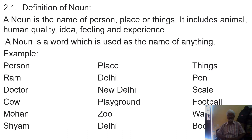A noun is a word used as the name of anything. We try to understand it through name — we ask: what is the name of the thing? For example, in person: Ram, doctor, cow, Mohan, Shyam. In places: Delhi, New Delhi, playground. And things: pen, scale, football, water, book, pencil, blade, cutter, softener — many things we have on hand to understand this.